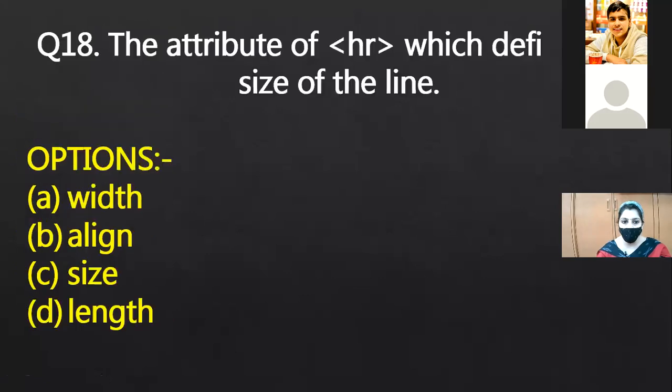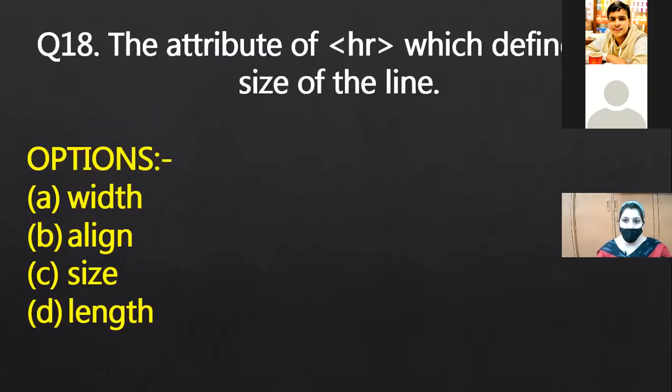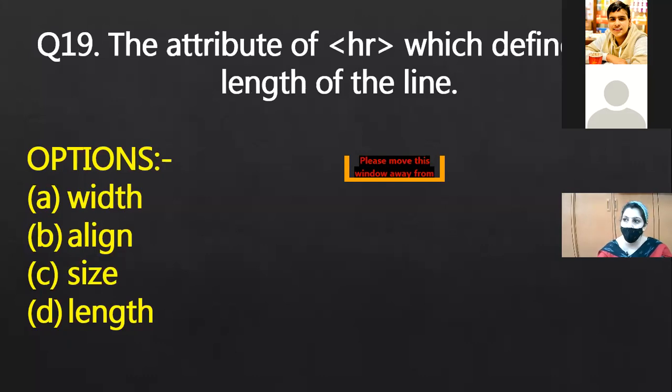The attribute of HR which defines the size of the line. Size of the line. Any other answer? Why? I haven't said length of the line. Size of the line means size attribute. Width, width, thickness. If I ask length, then the answer would be width. Width for length, size for thickness. Which defines the length of the line? Width. The difference is clear between size and width attribute?